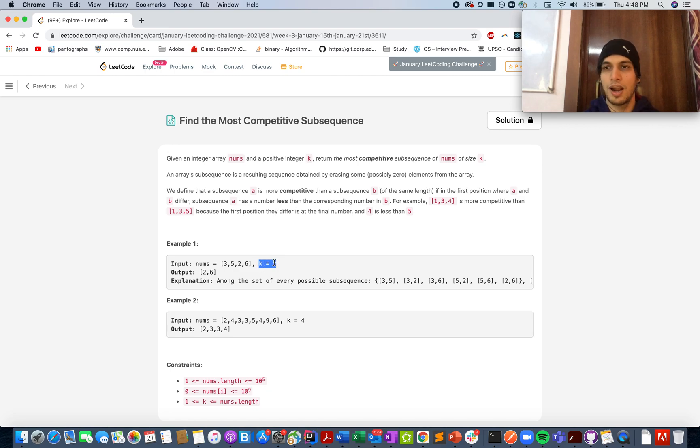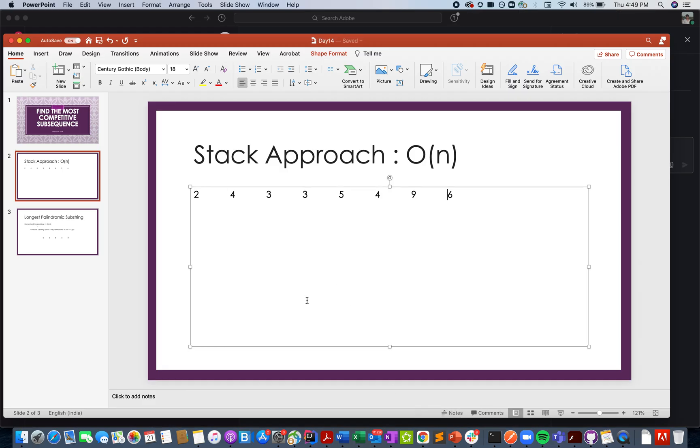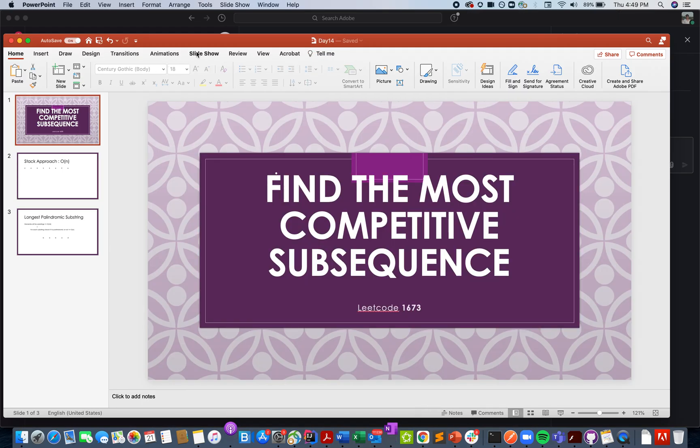One standard solution is to generate all the subsequences of size k and then compare them one by one, maybe using a priority queue, removing the one that is less competitive which is of more value, and accepting the one which is of lower value and more competitive in nature. This is the first thought process that came to my mind when I read this question. But we will not solve this by the standard brute force approach. We will go with another solution using stacks. Let me just start the slide show.